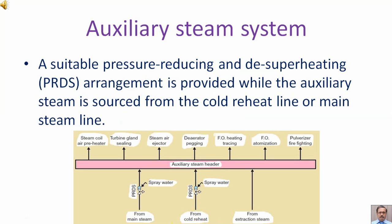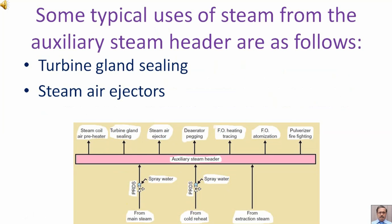A suitable pressure reducing and desuperheating (PRDS) arrangement is provided while the auxiliary steam is sourced from the cold reheat line or main steam line. Some typical uses of steam from the auxiliary steam header are as follows.